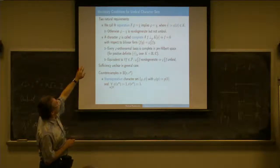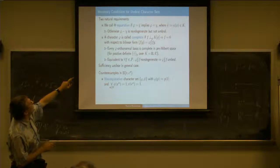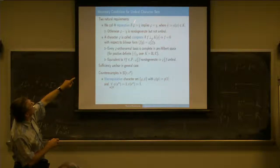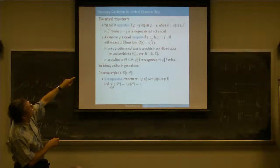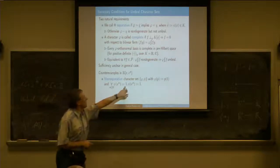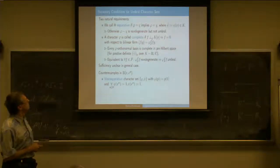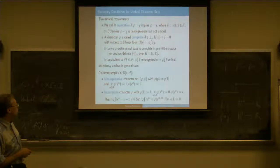Normally, you would expect a character set to be separative, in the sense that if the characters act the same—this phi-bar is the action of phi, the enthused function—then they should also be equal to each other. But there is an example where this is not the case.